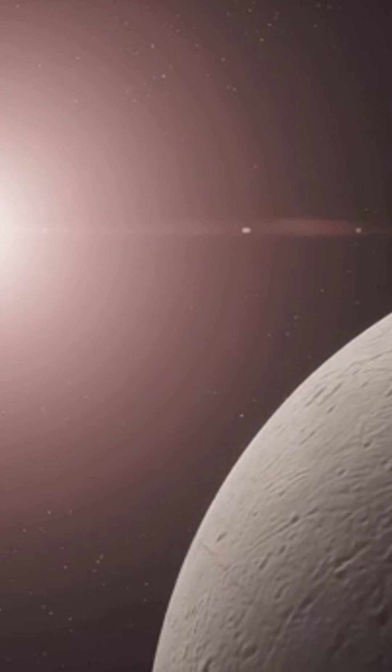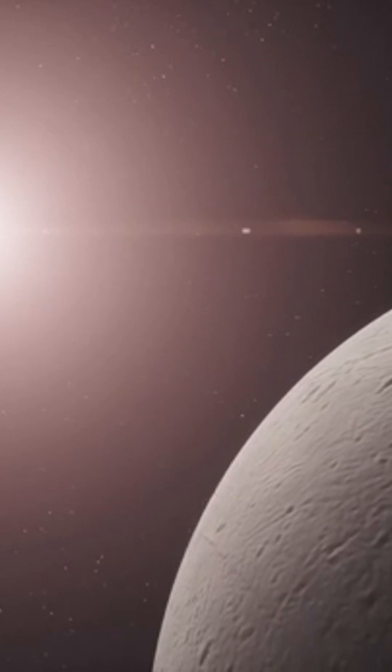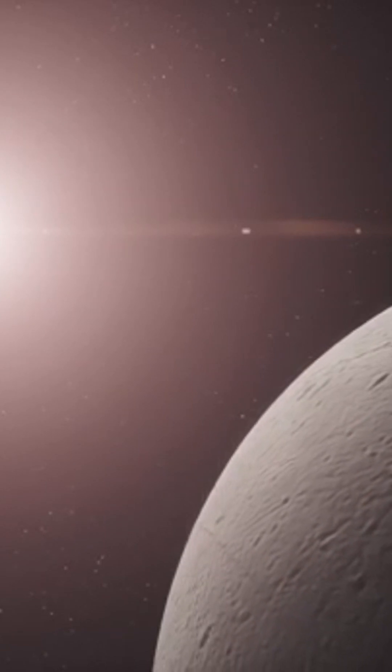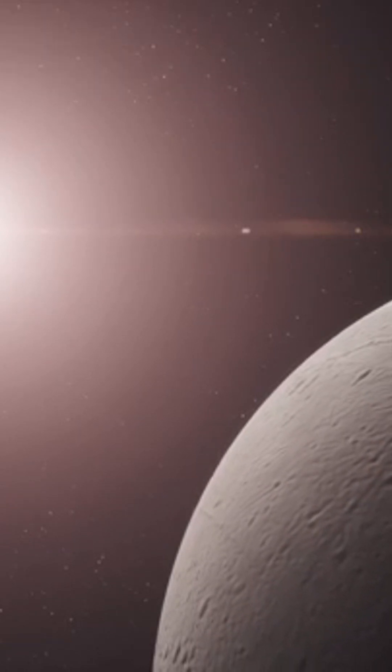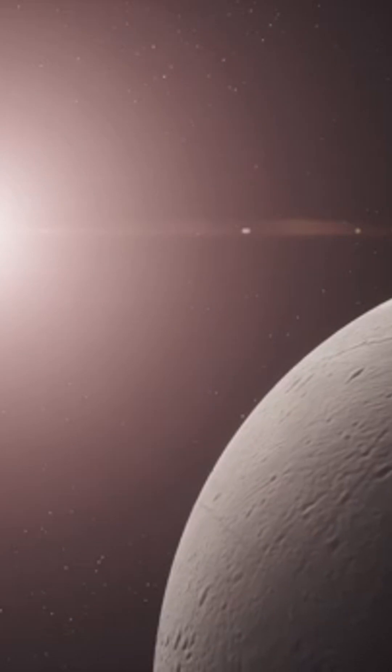These four parallel blue faults that you can see running towards the South Pole are called the Tiger Stripes, 120 kilometers or 75 miles long and several hundred meters deep.